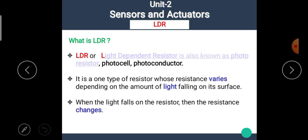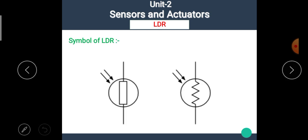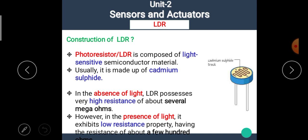When the light falls on the resistor, then the resistance changes. This is the symbol of LDR in which these arrows represent the light. Now, let's see the construction of LDR.